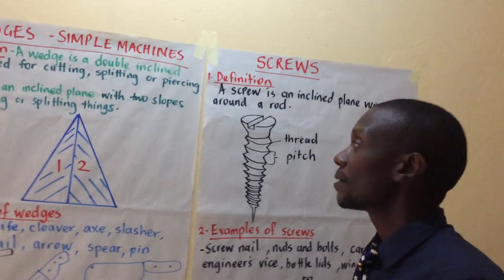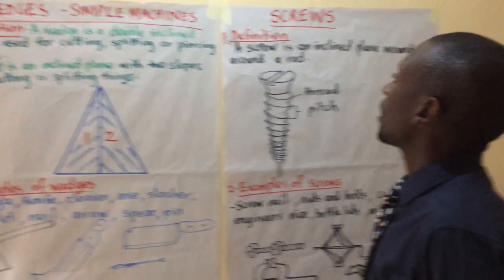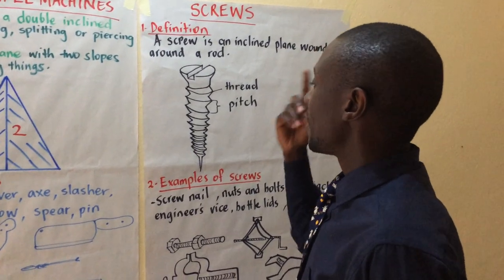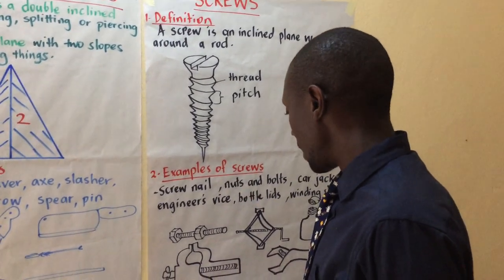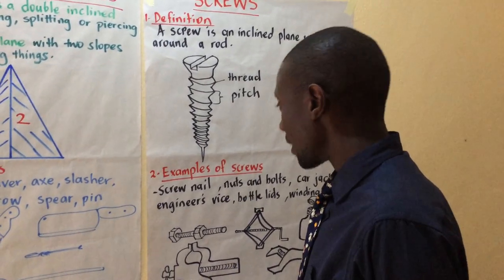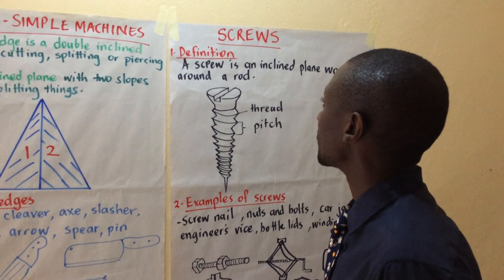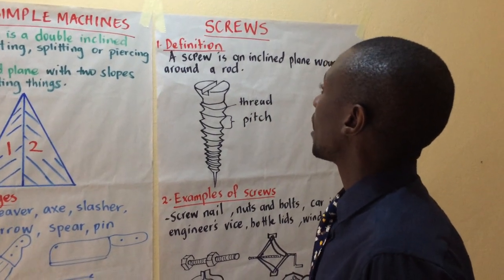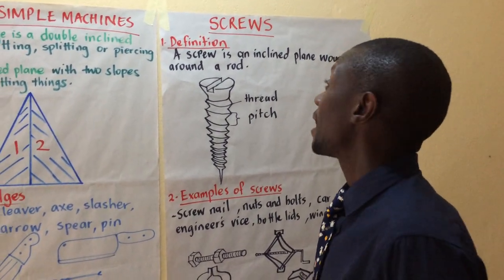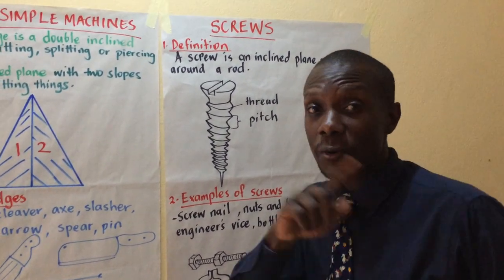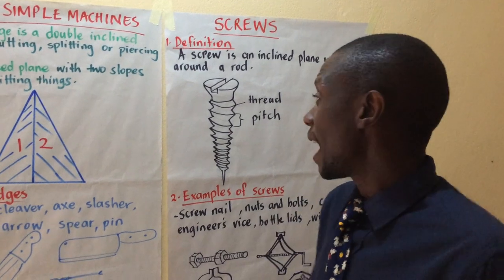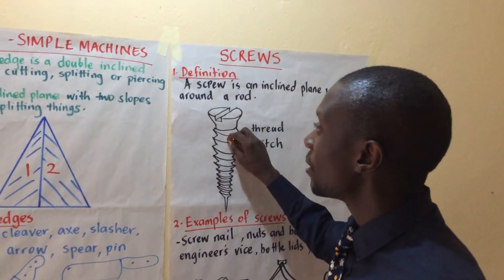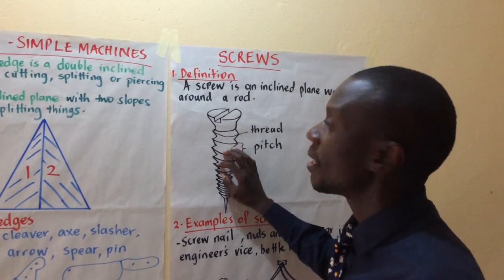Getting to screws. We are defining, then we give examples, then we shall look at the uses. A screw is an inclined plane that is wound around a rod.